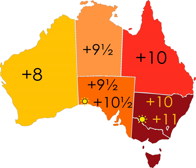Daylight saving time is used in states in the South and Southeast: South Australia, New South Wales, Victoria, Tasmania, and the ACT. It is not currently used in Western Australia, the Northern Territory, or Queensland.